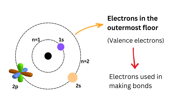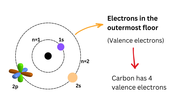Valence electrons are the ones that decide how the atom behaves when making friends or forming bonds, because they are the easiest to reach and share. The number of these outer electrons determines the atom's valency, or how many bonds it can form. For example, carbon has four valence electrons, so it can make four bonds.